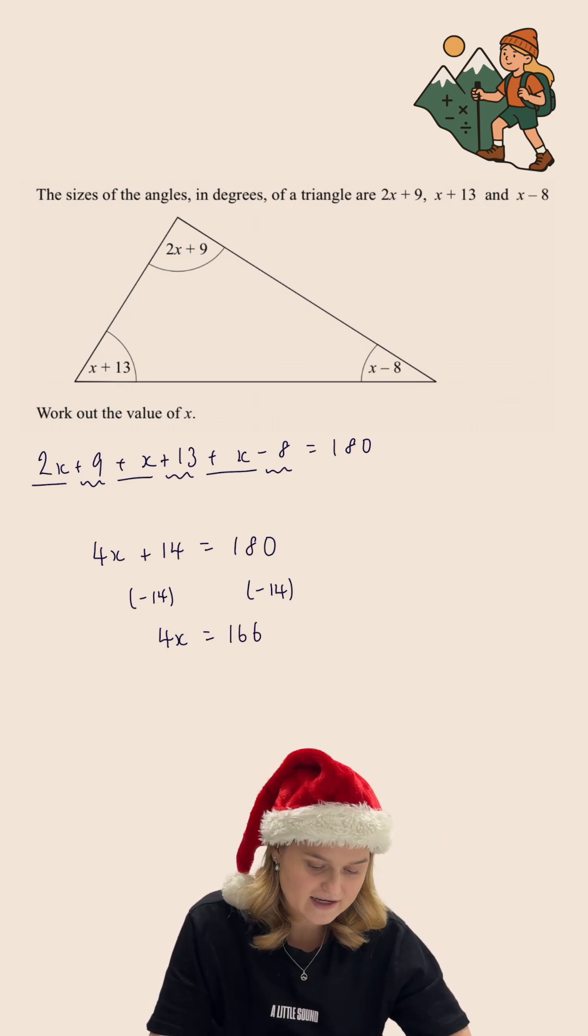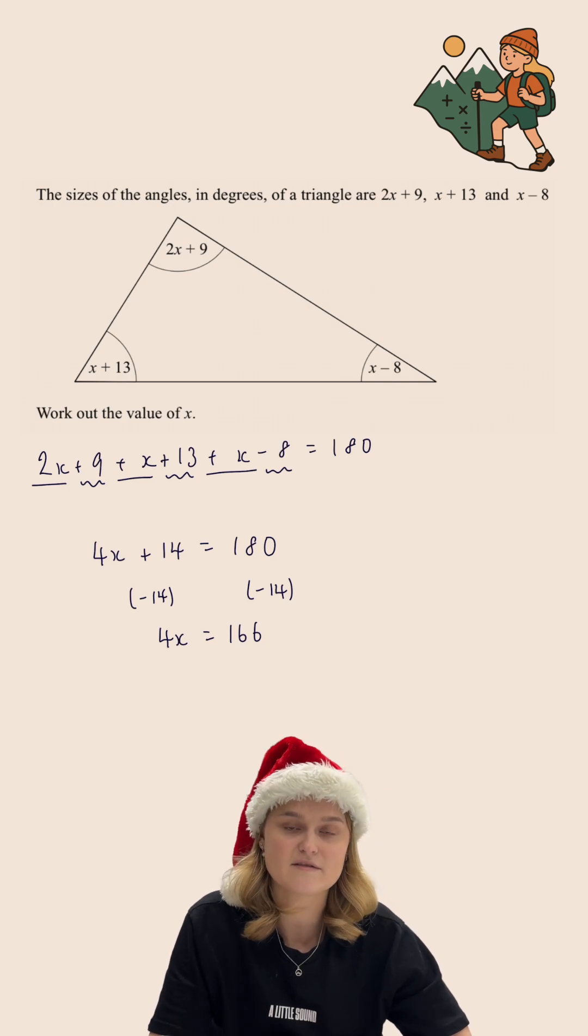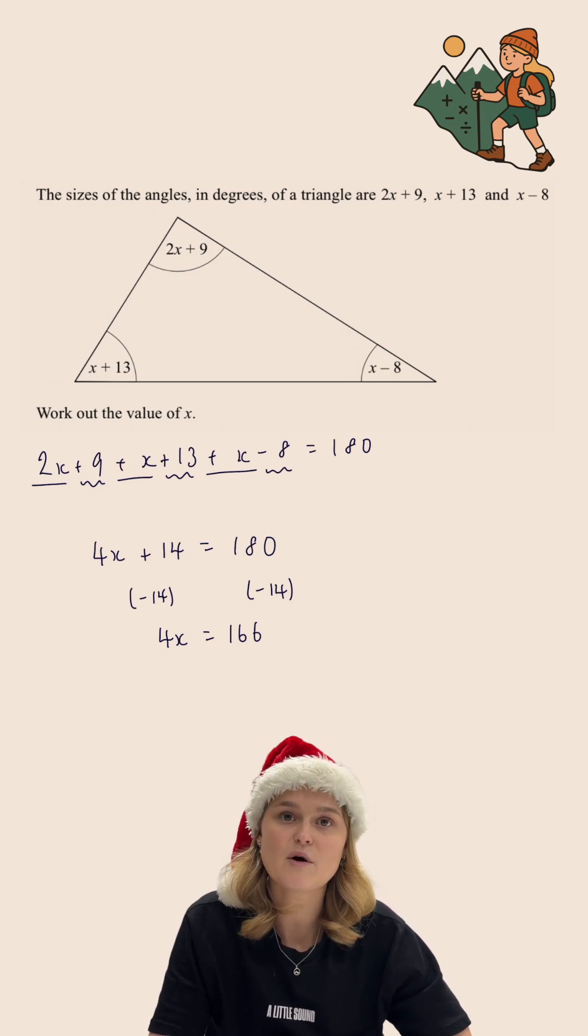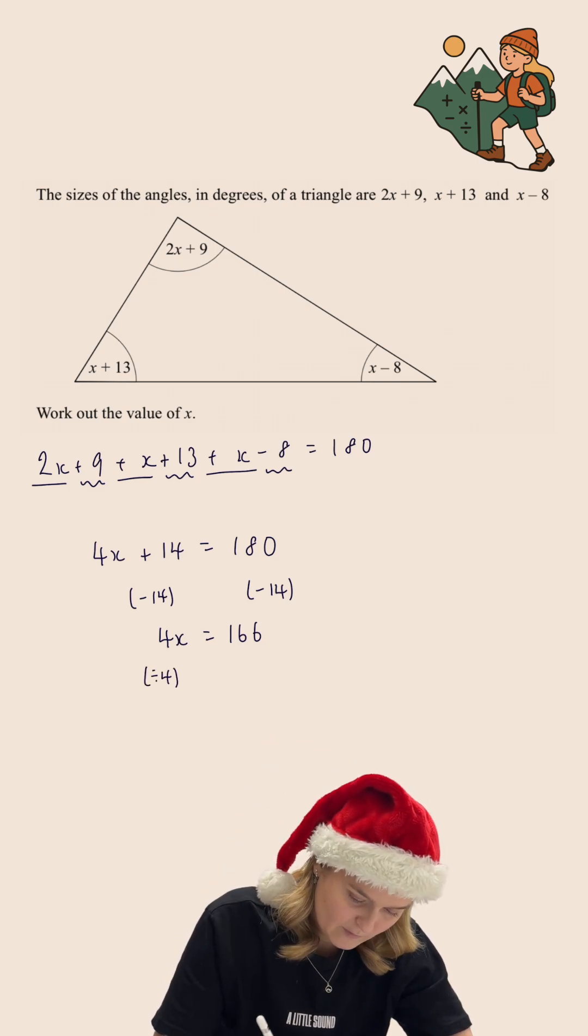The final thing I need to get rid of is the 4 that is in front of the x. Now 4x means 4 multiplied by x. The inverse of multiplying by 4 is dividing by 4.